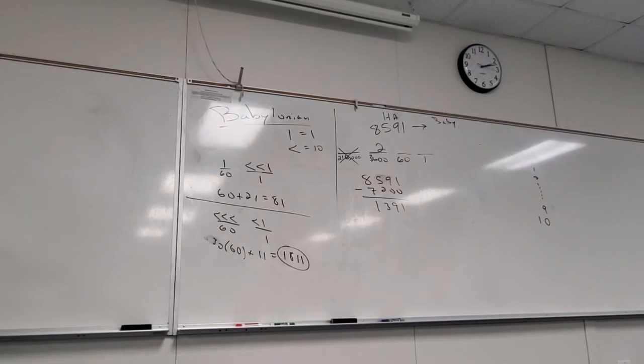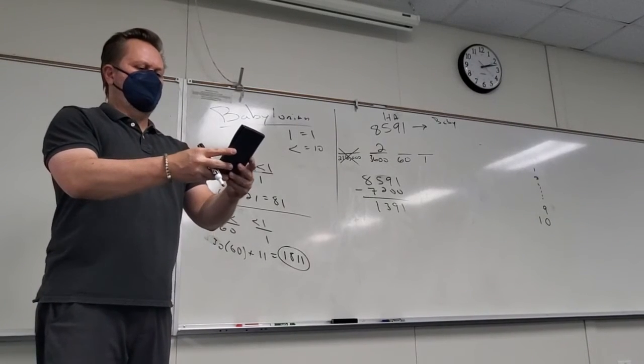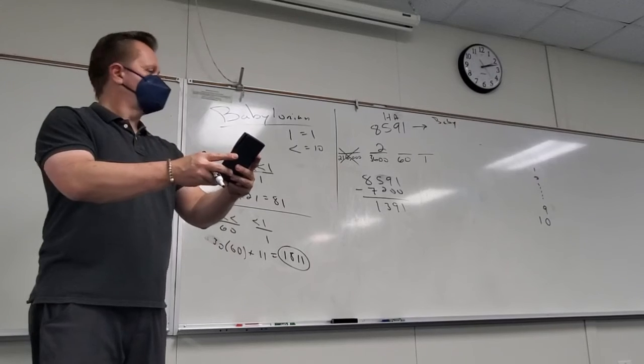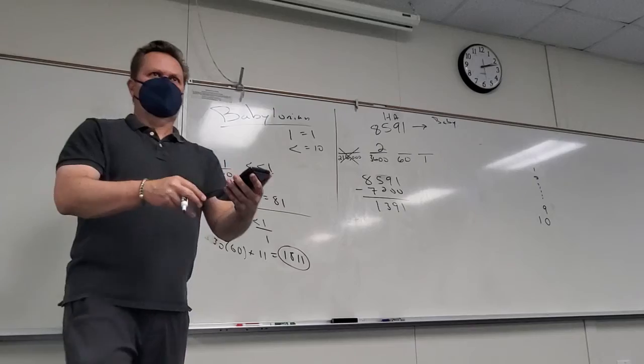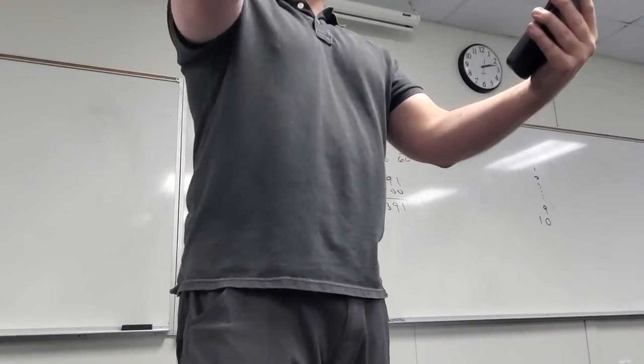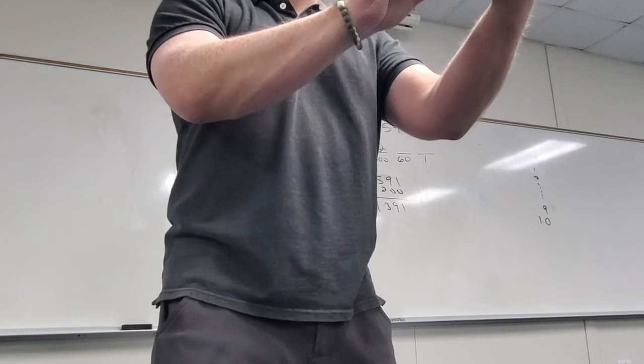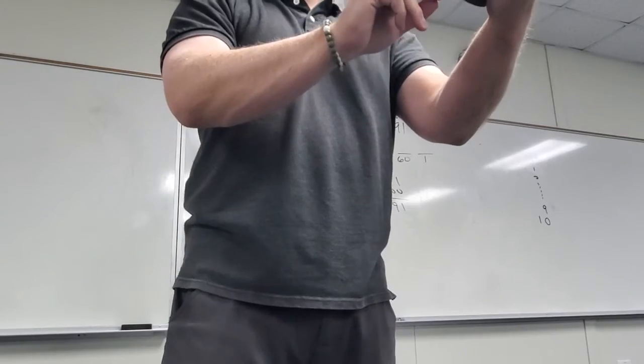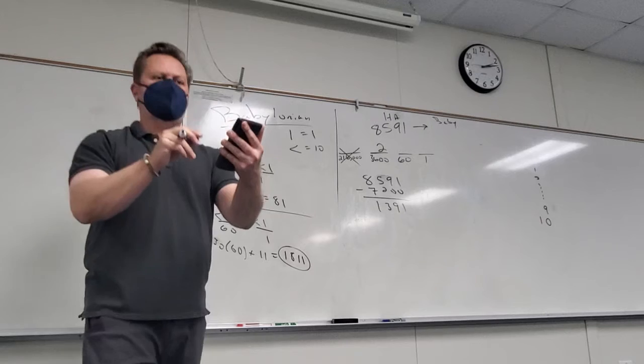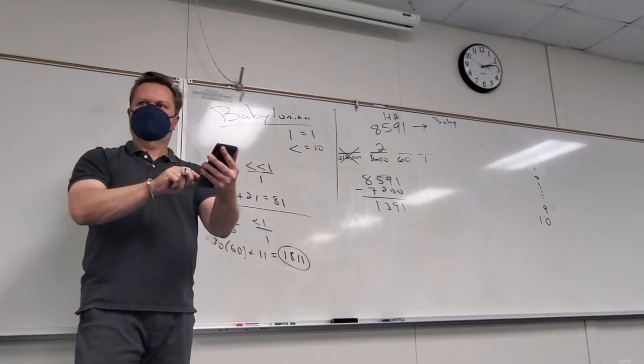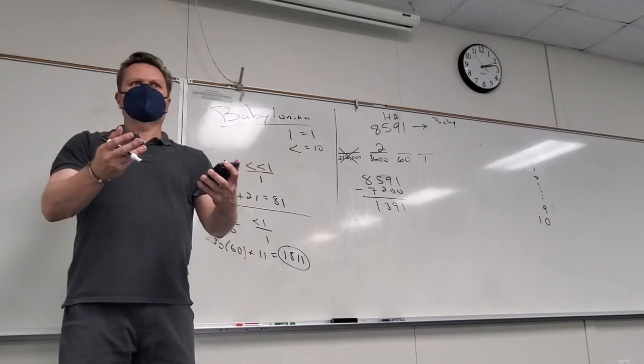Somebody's always making a mistake saying it's three, but we know this symbol means 10. So I have 30 60s plus, like you said, 11. So 1,811? Yes. I love it. Very trippy. Very different. Really quick. What idea do you think we kind of stole from the Babylonian space?